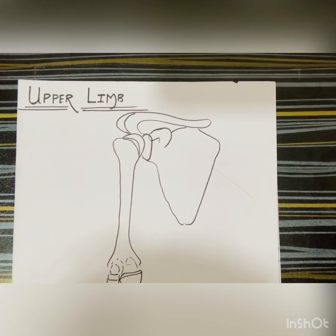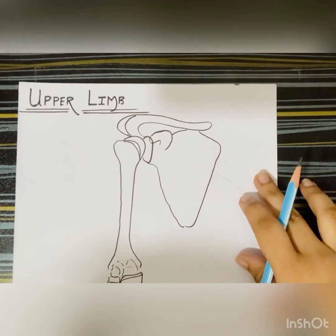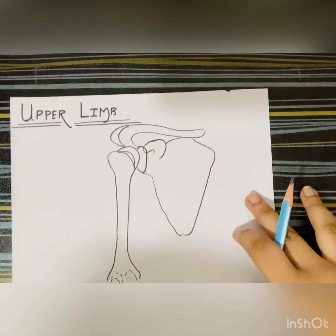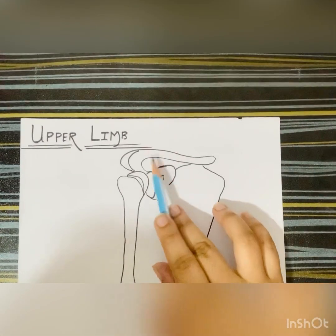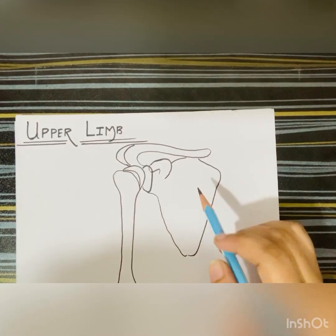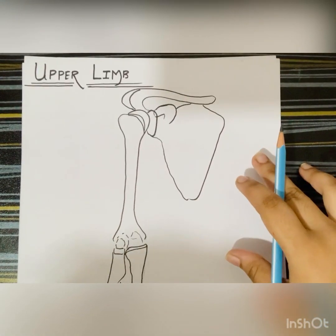Hello everyone. Let's start today with the anatomy of the upper limb, that is the bones of the upper limb. The upper limb bones consist of the clavicle, the scapula, and then the bones of the upper arm.